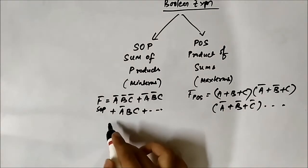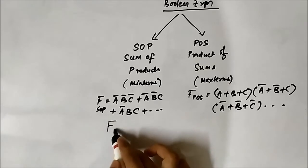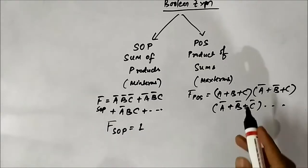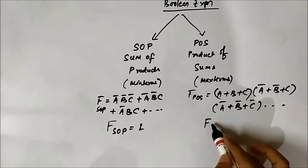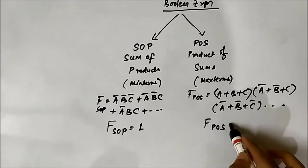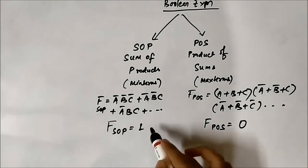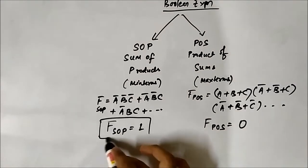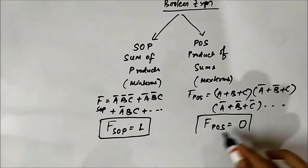Another important thing: the value of the SOP Boolean expression is always 1, whereas for POS it is always 0. This is very important — SOP value is 1, POS value is always 0.